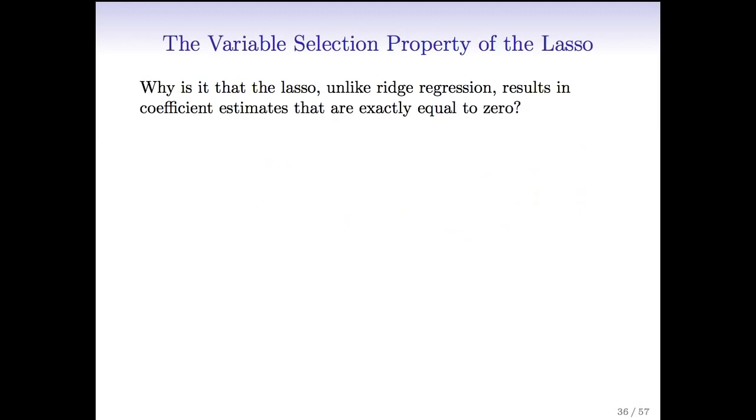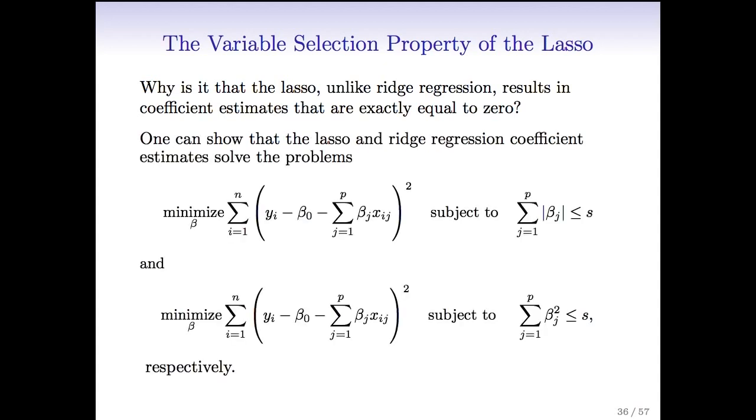So at this point, it might seem like magic. Why is it that just using an absolute value penalty gives us the sparsity property? Why do we get exactly zero? I'm going to show you that in the picture. First of all, we can formulate the problem in an equivalent way. Rather than putting a penalty, remember before I had the RSS plus lambda times the sum of the absolute values. An equivalent way to pose the lasso problem is to say minimize the RSS with a constraint, a budget on the total L1 norm of the coefficients.